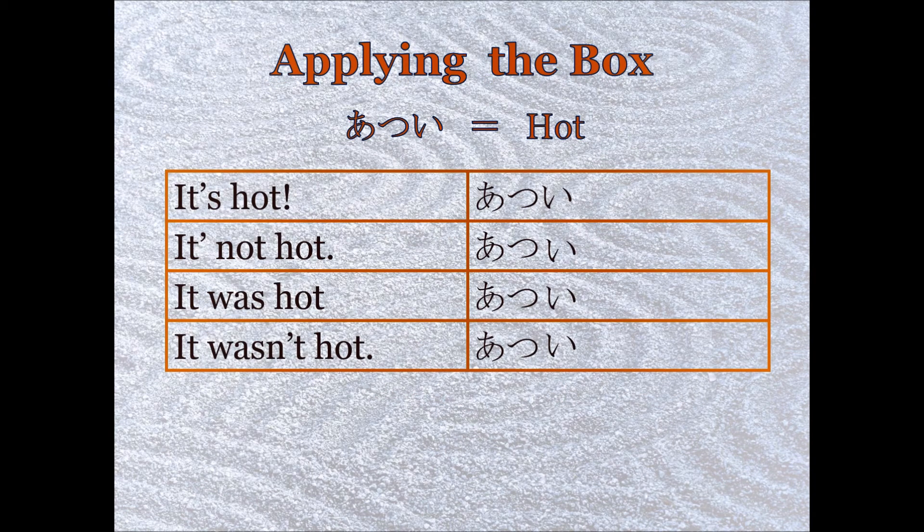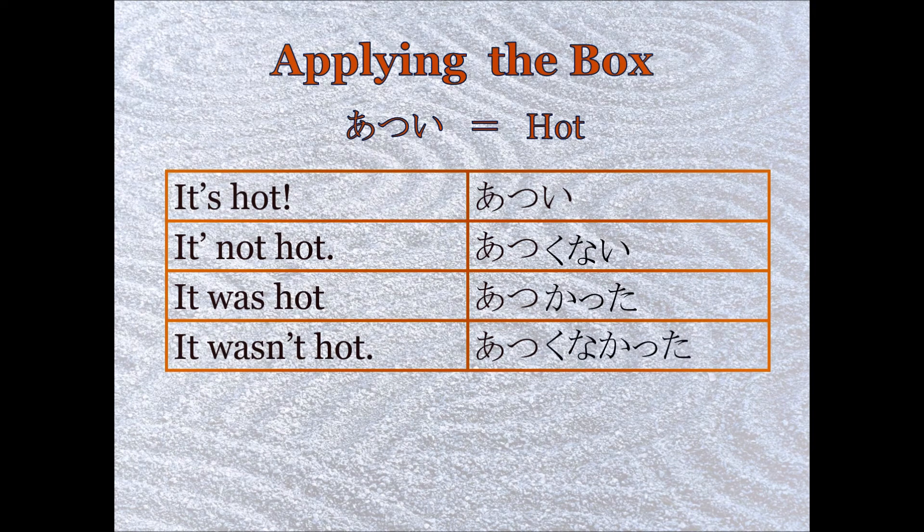So we have hot, atsui. If we want to say it's hot, we just say atsui. If we want to say it's not hot, we drop that i and it becomes atsukunai. If we want to say it was hot, we drop the i and it becomes atsukatta. If we want to say it wasn't hot, we drop the i and it becomes atsukunakatta.